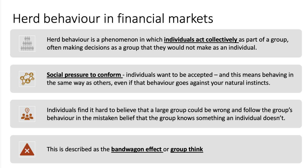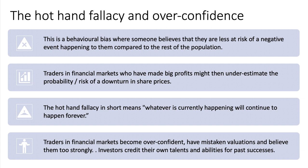The second explanation is that people find it hard to believe that the large group — the wisdom of the crowd — could be wrong. So they tend to follow the group's behavior in a largely mistaken belief that the group knows something collectively that an individual doesn't. Herd behavior is basically about deciding based in part on the behavior and choices of others — we call this the bandwagon effect, or sometimes groupthink.